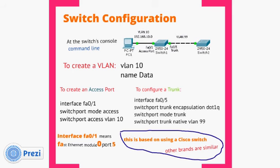To configure a trunk, using interface FA0/5 — port 5 on the switch — you enter 'switchport trunk encapsulation dot1q', which sets the encapsulation protocol. This command is optional on some switches that only know .1q. Then 'switchport mode trunk' puts it into trunk mode, meaning it's going to talk to another switch. Then 'switchport trunk native vlan 99' sets the native VLAN. Now the trunk knows its native VLAN and can carry tagged traffic for other VLANs like VLAN 10.